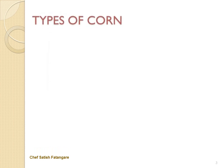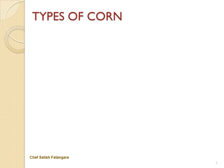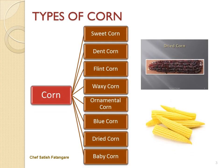In this slide we will discuss about the types of corn. The types of corn are sweet corn, dent corn, flint corn, waxy corn, ornamental corn, blue corn, dried corn, and baby corn.